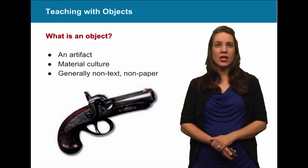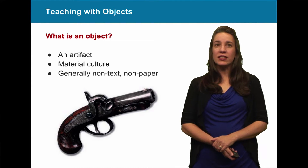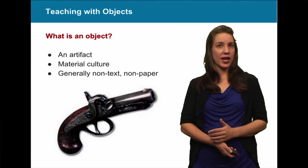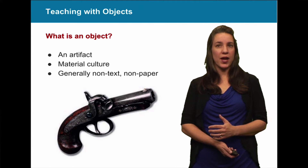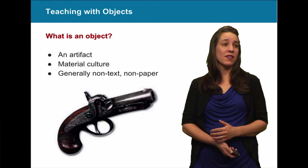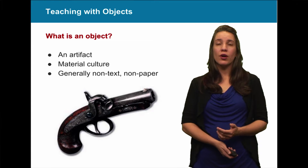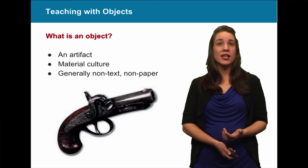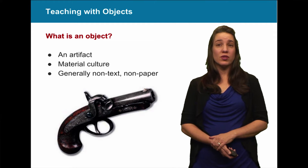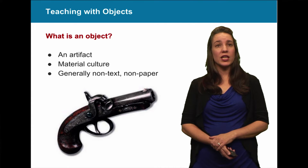What is an object? Generally it's called an artifact. It's a part of material culture. They're usually non-text, non-paper historical items. They can be something used in daily life or something that has become very famous, such as the object you see pictured here, which was the gun used to assassinate President Abraham Lincoln in April of 1865.